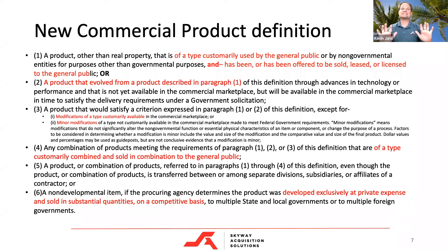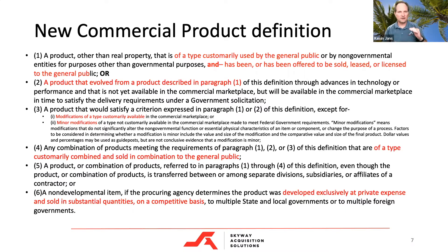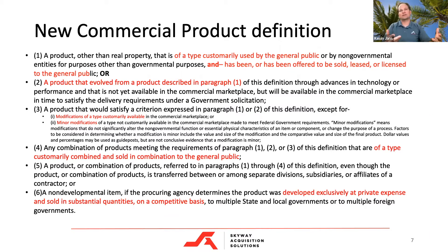Now we get more into the specificity of the new definition. The next paragraph says a product that evolved from a product described in paragraph one. So if you have a commercial item that you've tweaked — and the definition of tweak, you can drive a truck through that — when you're talking to the customer, have them take it to the contracting officer and say, here's why it's evolved from a commercial item. Ergo, by this definition, it's still a commercial product.